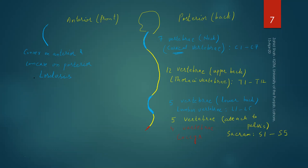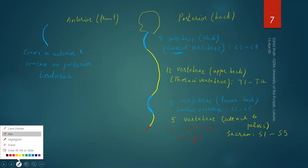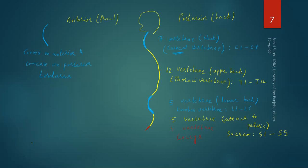The curve formed by the thoracic vertebrae and the curve formed by the sacrum and coccyx have the opposite shape — concave on the anterior side and convex on the posterior side. Such a curve is called kyphosis, or a kyphotic curve.